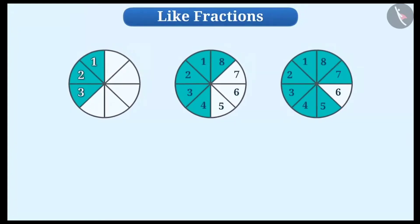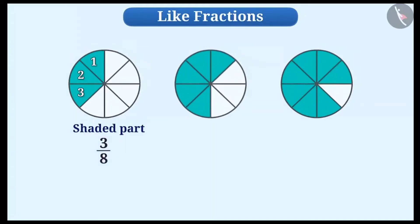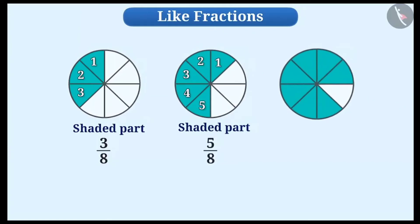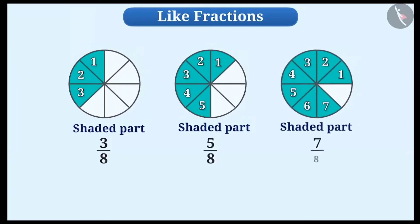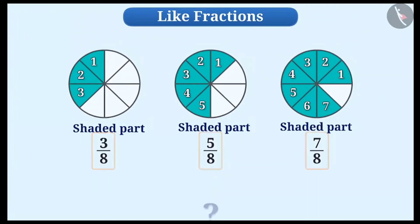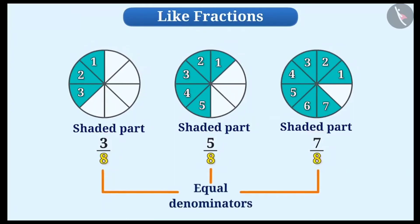Since 3 out of 8 parts are shaded in the first figure, the fraction of shaded parts can be represented as 3 by 8. Similarly, the shaded parts in the second figure is 5 by 8, and the shaded parts in the third figure is 7 by 8. Can you identify the similarity in these fractions while looking at them? Yes, the denominators are equal.